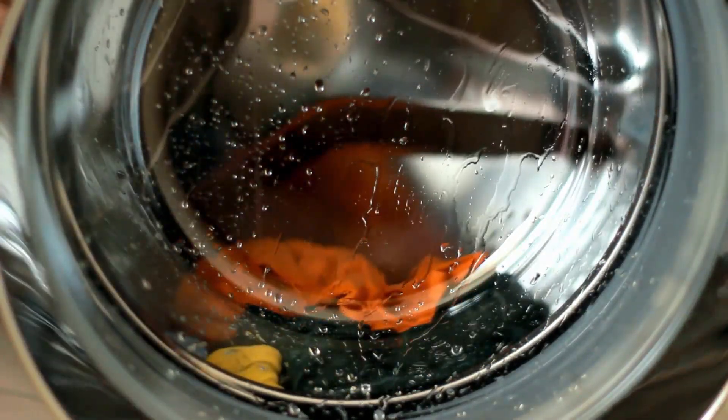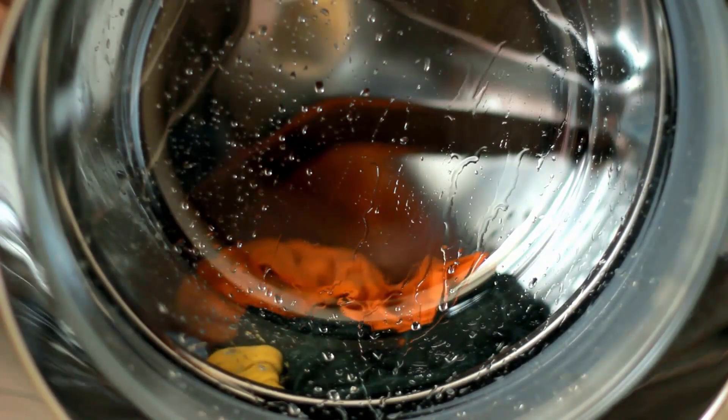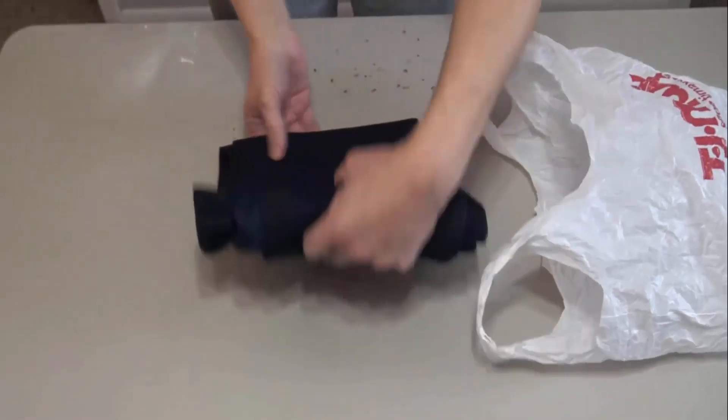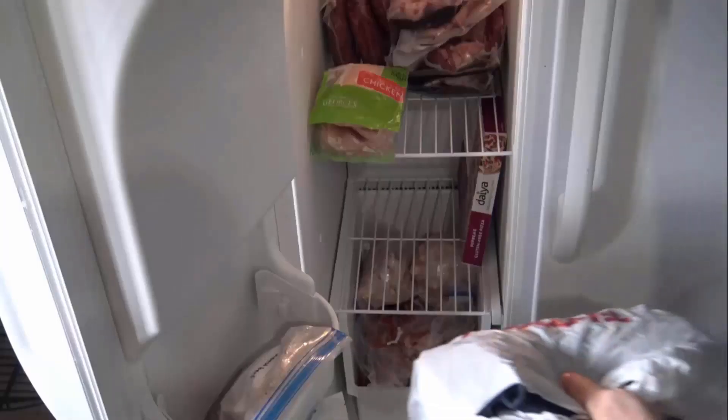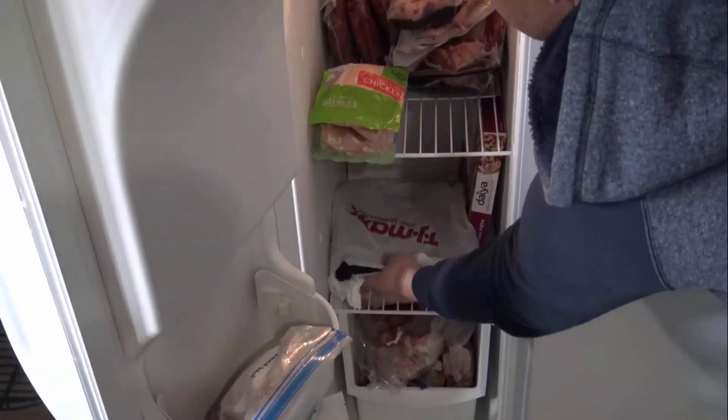Wash clothes that contain larvae or eggs. Use hot water and high heat in the dryer, if possible. For clothes that cannot be washed or dried hot, simply put wet clothes in a bag and then put it in the freezer for a day to kill larvae and eggs.